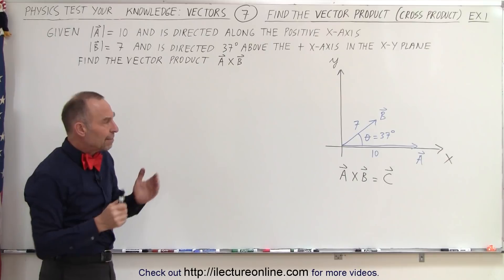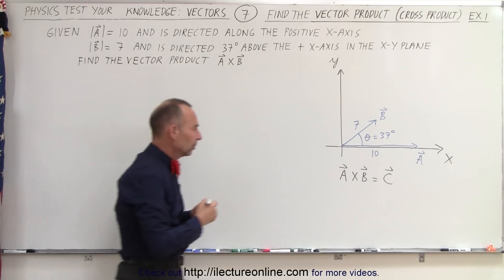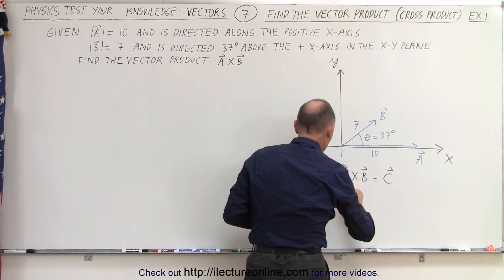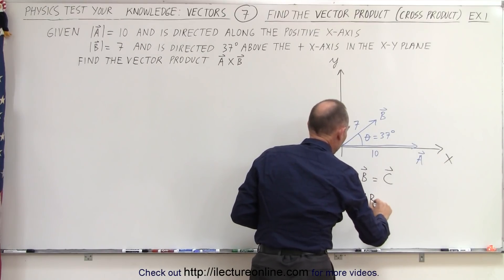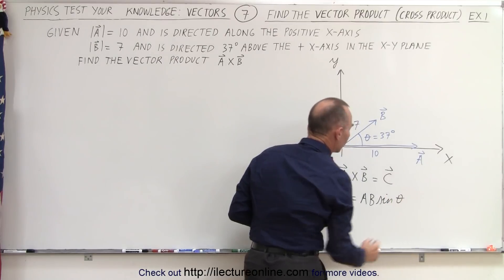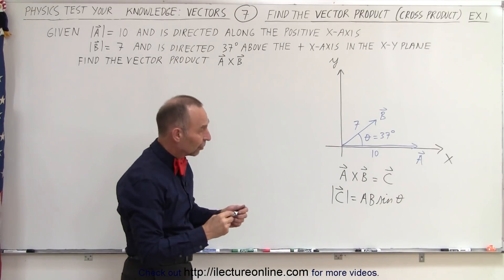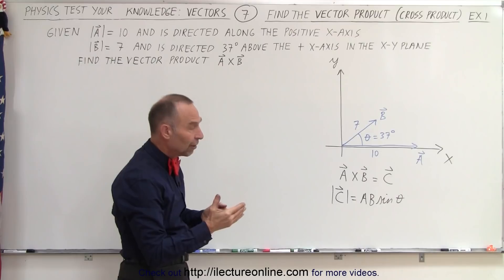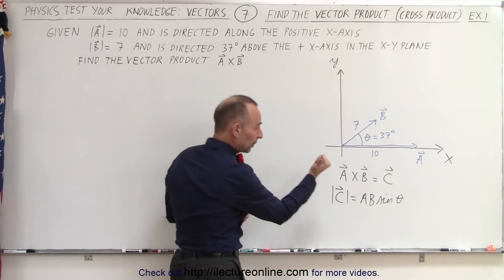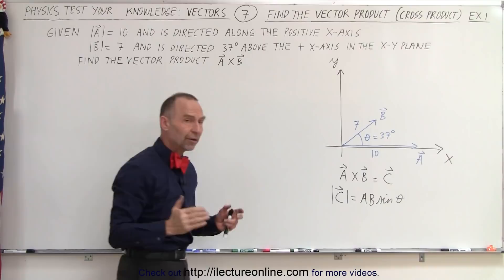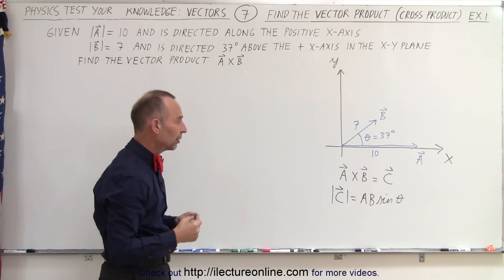We can also find the magnitude of that vector. The magnitude of C is equal to the magnitude of A times the magnitude of B times the sine of the angle between the two. We can find the direction of the resultant by using the right-hand rule, pointing in the positive Z direction. We can find the magnitude by using that particular equation.